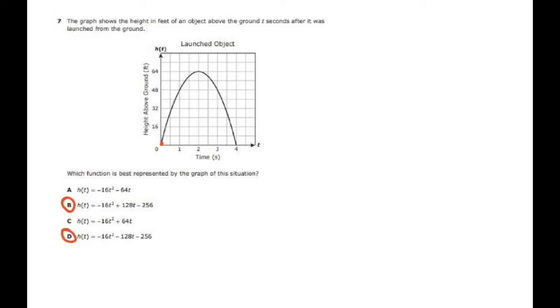If you want you could change all these h(t)'s if that bothers you and just make it y. So for example on B, I can write y equals negative 16, and then for t which is your x, I'm going to write zero squared plus 128 times zero minus 256.